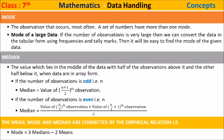Mode is the observation that occurs most often. A set of numbers can have more than one mode. For mode of large data, if the number of observations is very large, we can convert the data into tabular form using frequencies and tally marks, which makes it easy to find the mode of the given data.